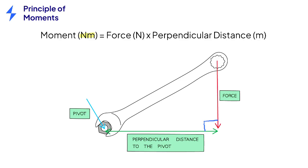The units for moments are newton metres or newton centimetres. This comes from the units of newtons for force and the units of metres or centimetres for distance.